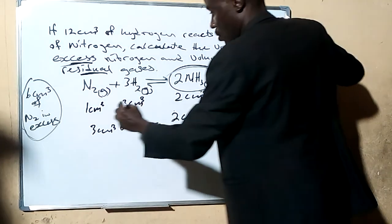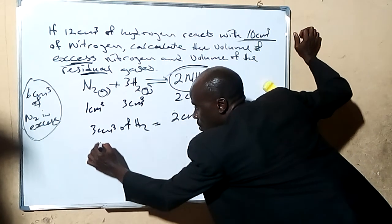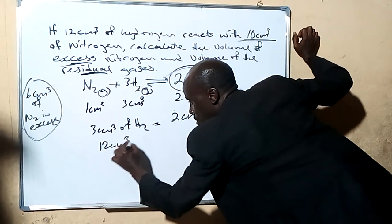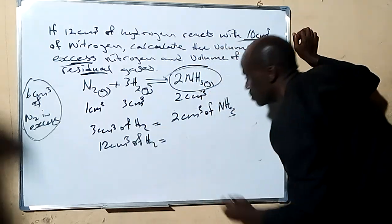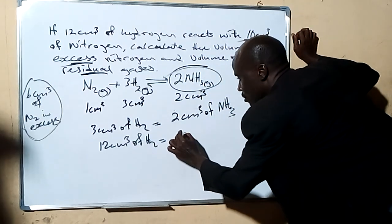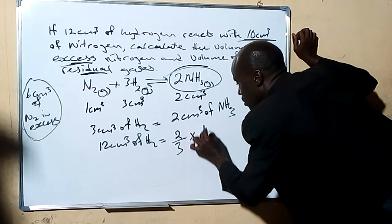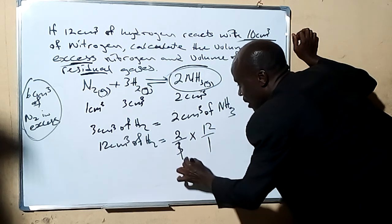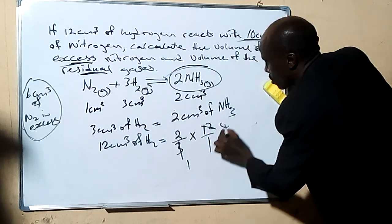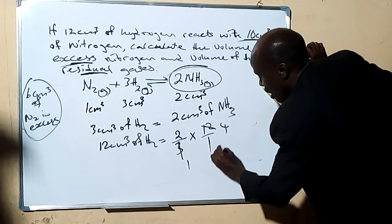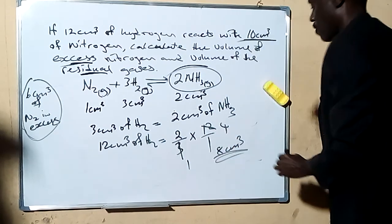So now, 12 cm³ of hydrogen will give us 2/3 × 12 = 8 cm³ of ammonia.